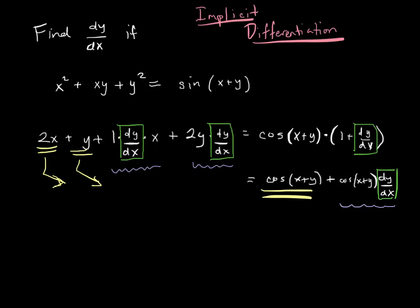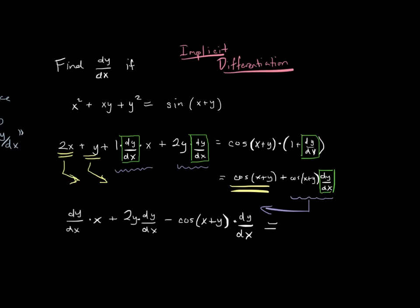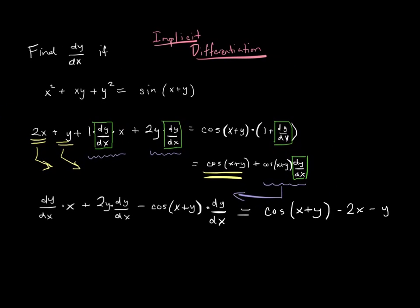I'm moving all the yellow terms to the right and the blue term to the left. I invite you to pause the video and try to do that. On the left-hand side of the equation I have this term, this term, and this term. All I did was move the 2x and the y to their distinguished places on the right-hand side of the equation.